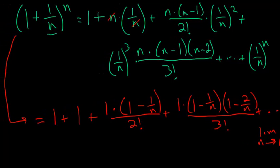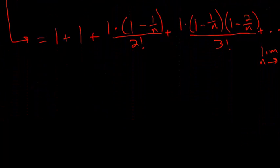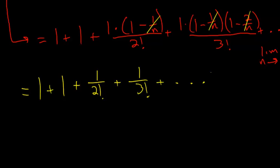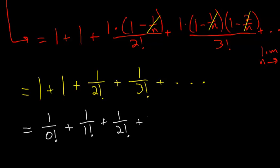When I take the limit as n approaches infinity, the 1/n terms in each factor approach 0 and cancel out, leaving all numerators as just 1. So we're left with 1 plus 1 plus 1 over 2 factorial plus 1 over 3 factorial, and so on — this is infinitely long. To better show the pattern, I can rewrite this as 1 over 0 factorial plus 1 over 1 factorial plus 1 over 2 factorial plus 1 over 3 factorial, and so on.